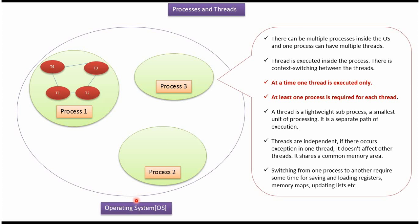Here inside the operating system there are three processes and process one has four threads. A thread is executed inside the process and there is context switching between the threads. At a time only one thread will be executed. And for each thread at least one process is required.